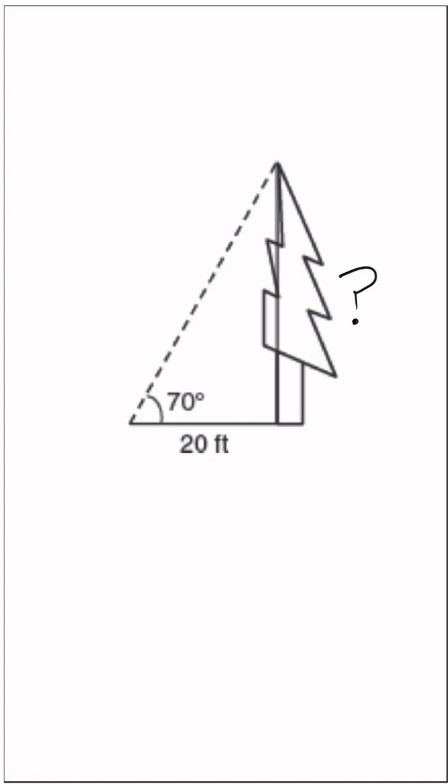Anytime we have a right triangle and we're looking for an angle or a side, we can use SOHCAHTOA. But before we do that, let's label the sides of our triangle so we know what we're looking for.